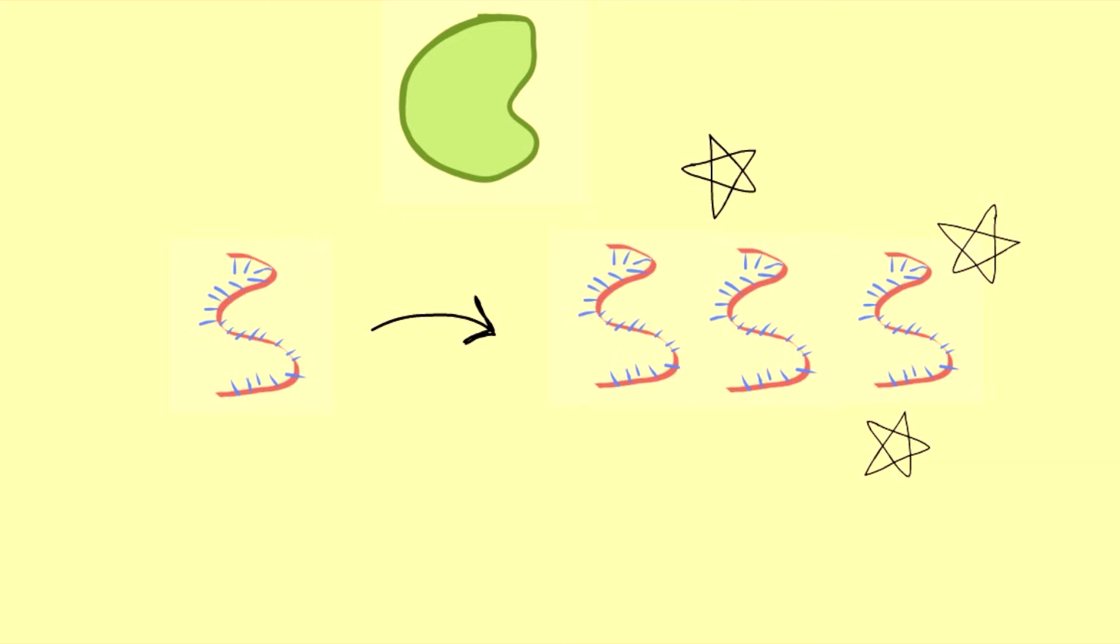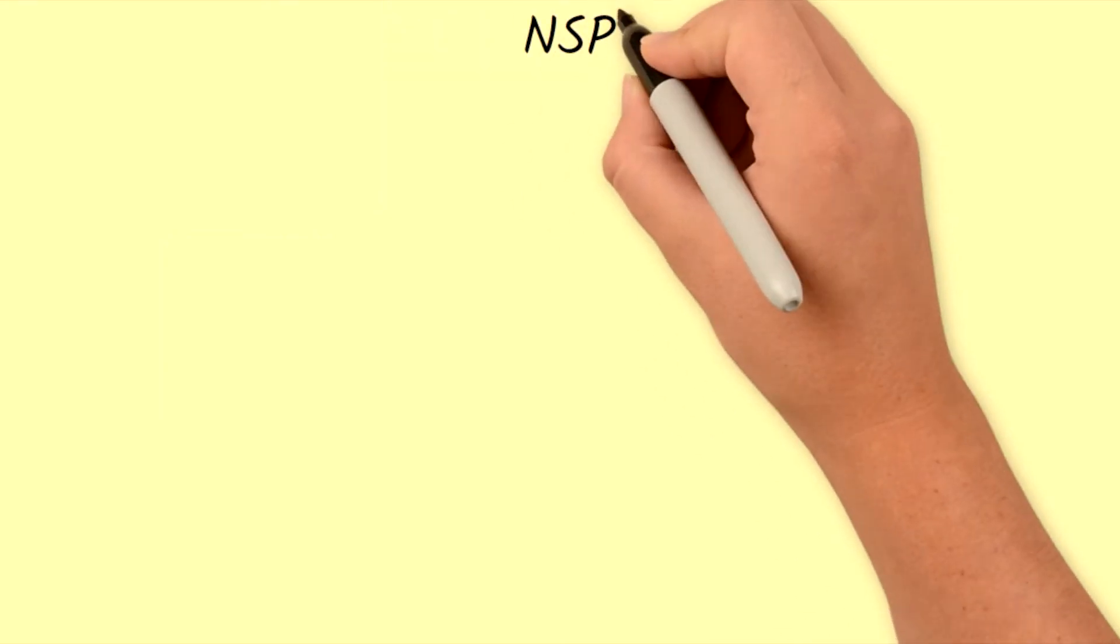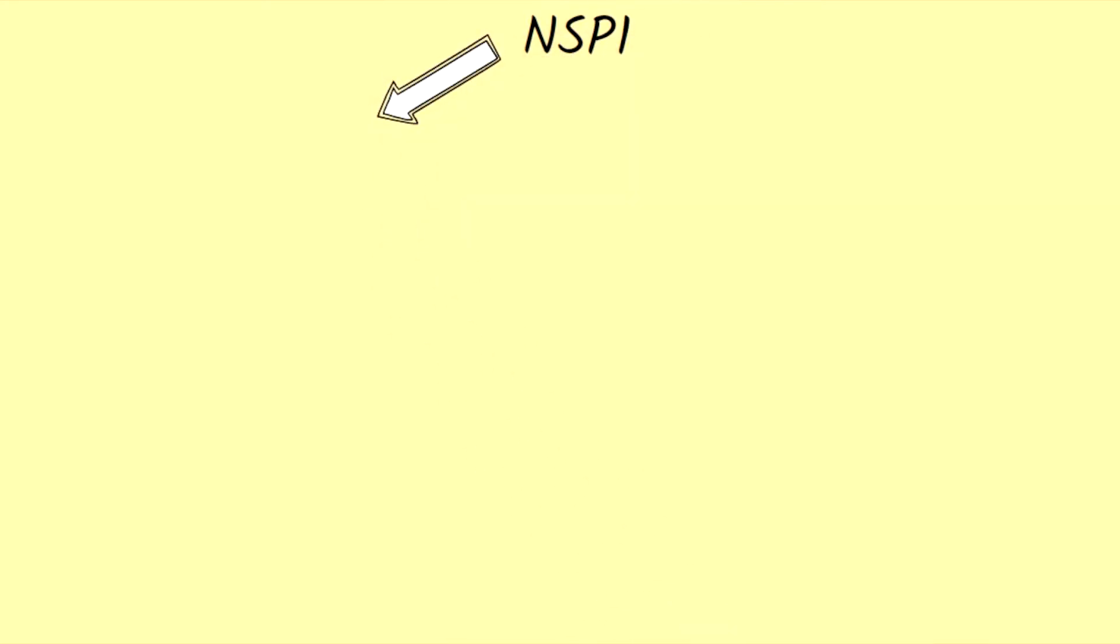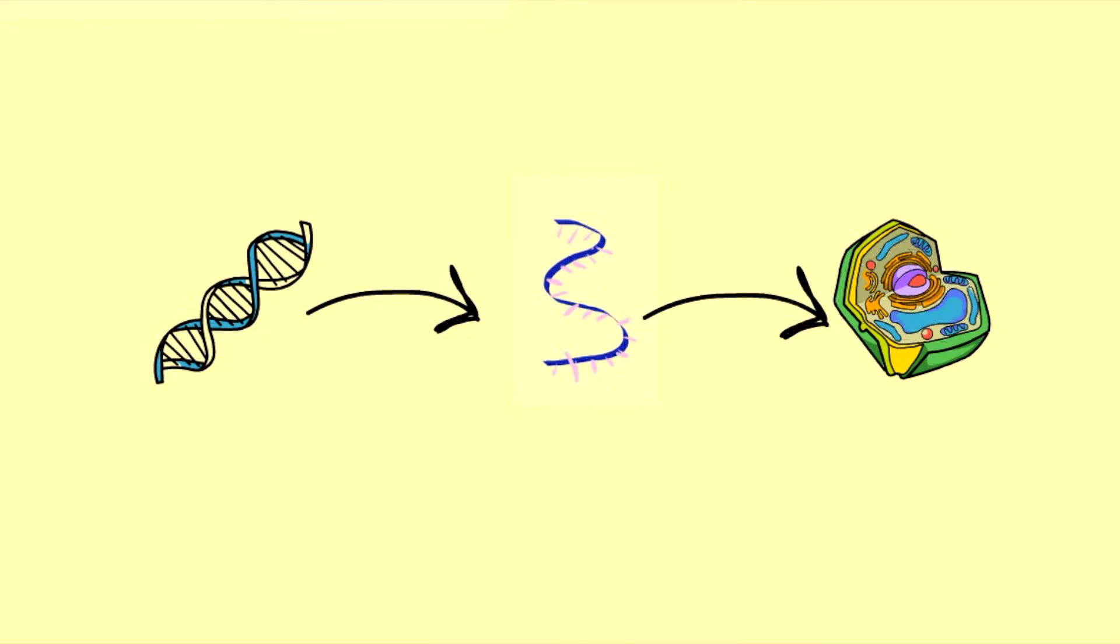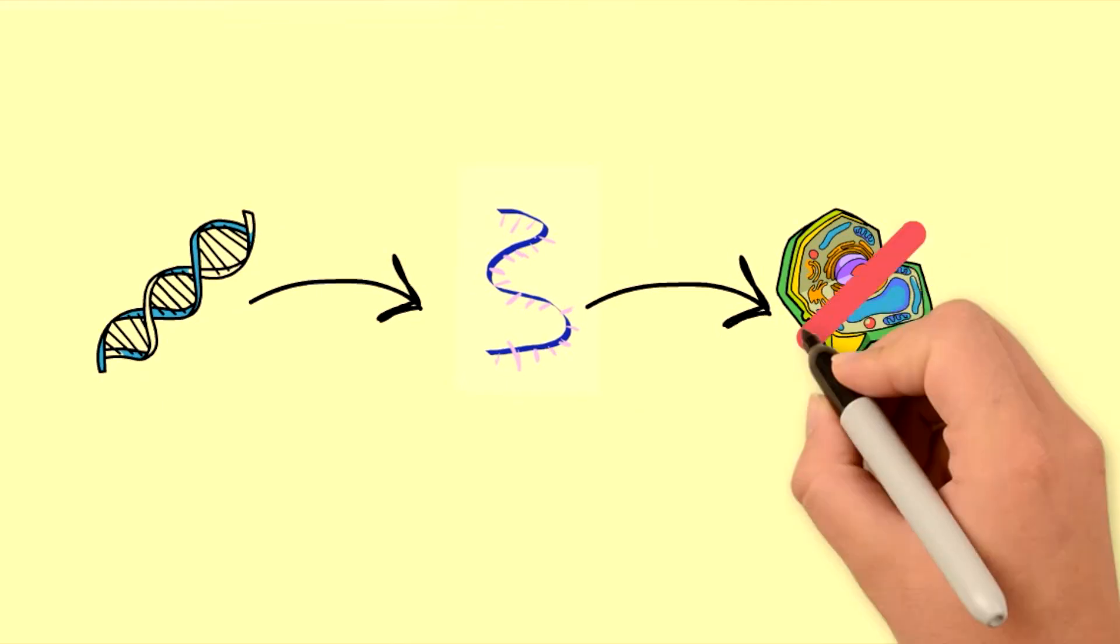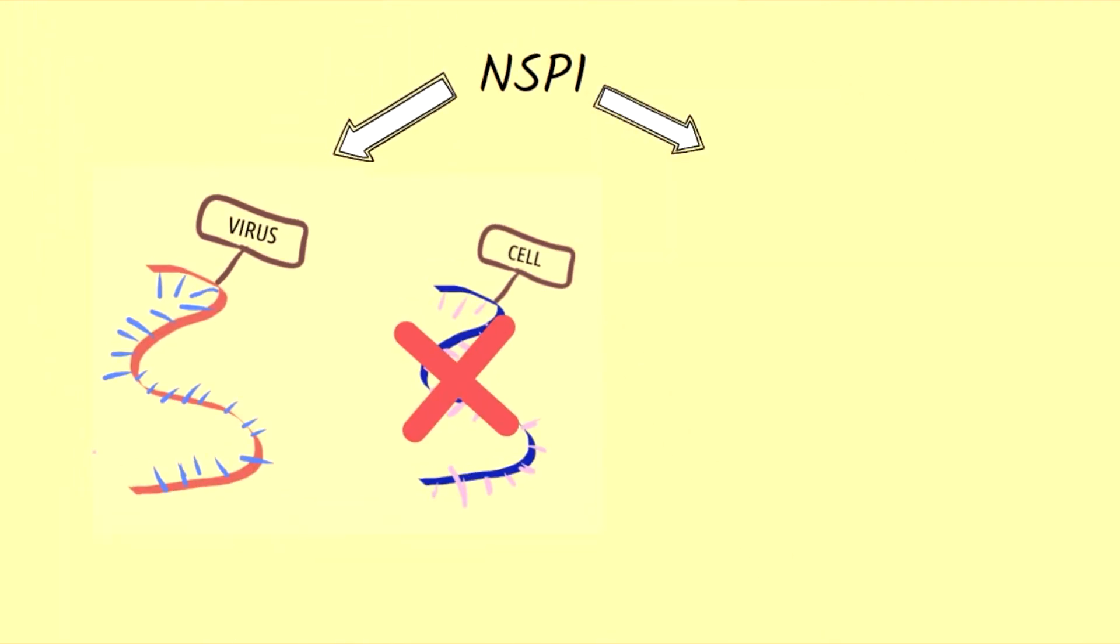Another protein that is produced during RNA translation is called NSP1. This protein is responsible for stopping any non-viral RNA from being translated. In a healthy cell, our DNA is converted into RNA, which is then translated into proteins that are involved in our body's processes. As a result, by preventing non-viral RNA from being translated into proteins, the infected cell cannot partake in many cellular activities. Another function of the NSP1 protein is to prevent the cell from releasing chemical signals for an immune response.